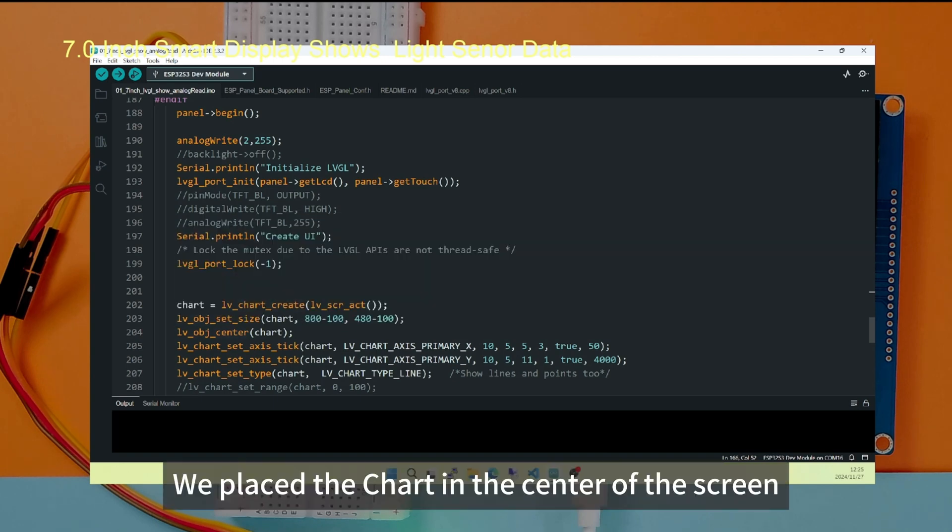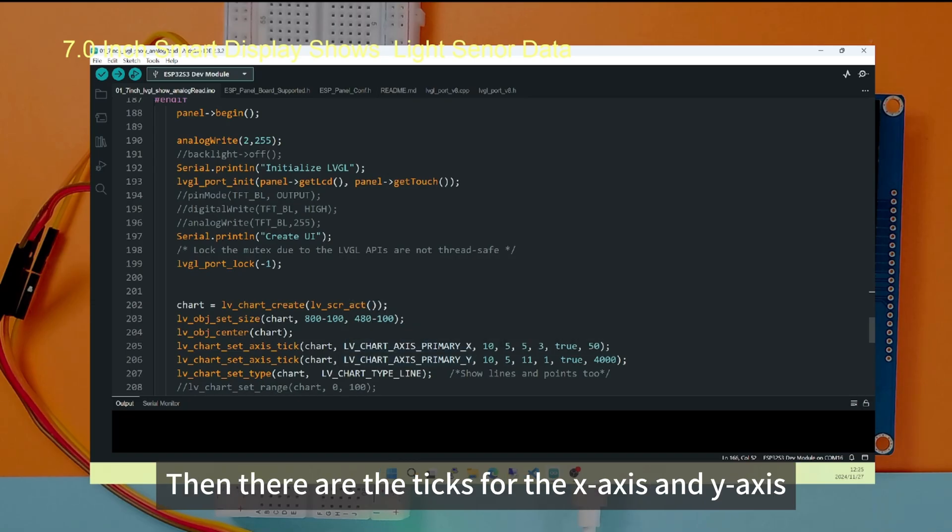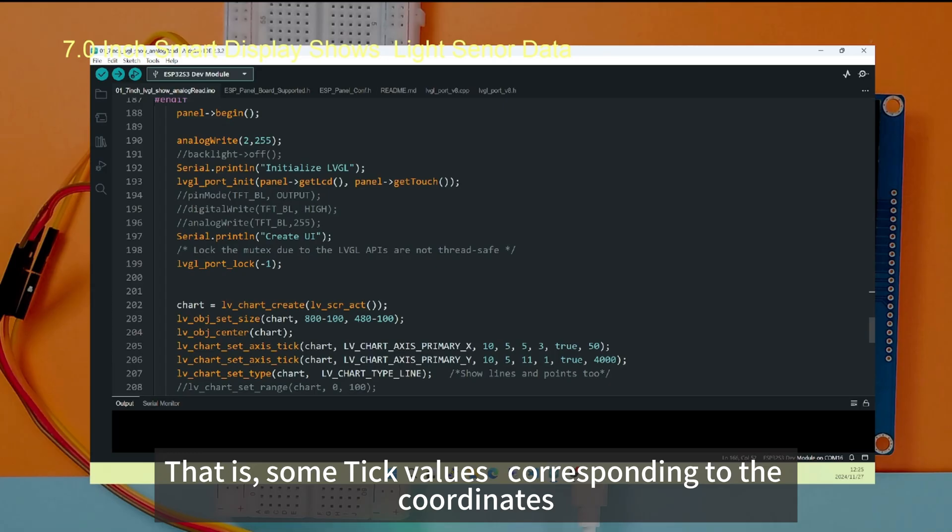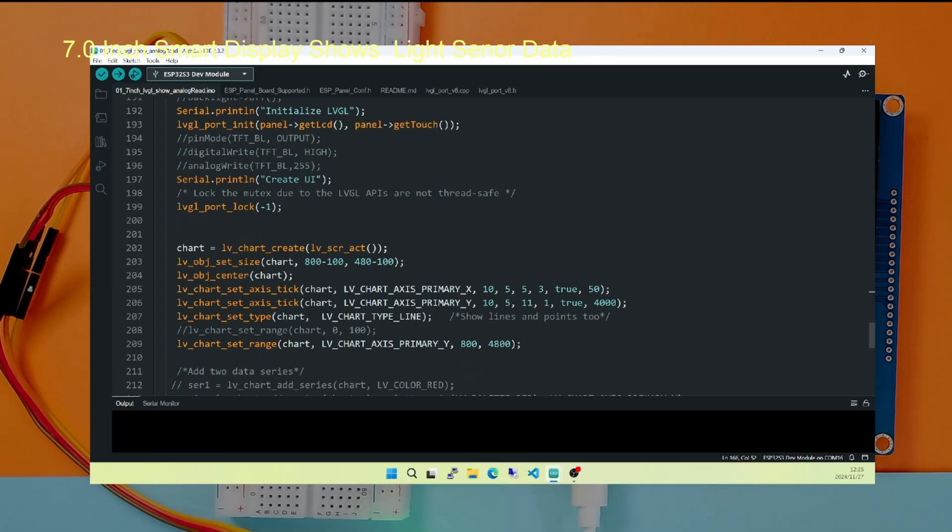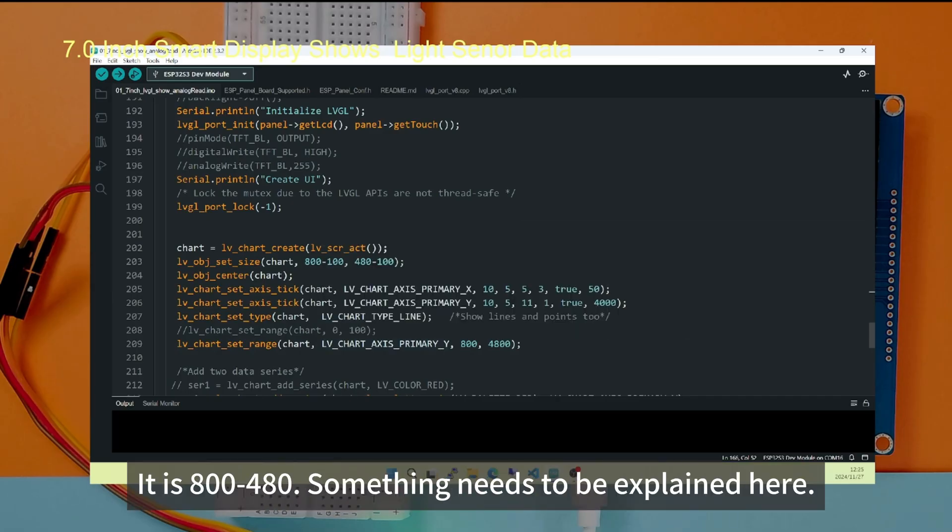The following code is the middle alignment. We place the chart in the center of the screen. Then there are the ticks for the x-axis and y-axis. That is, some tick values corresponding to the coordinates. We set a range for its y-axis. It is 800 to 480.